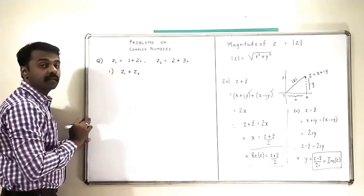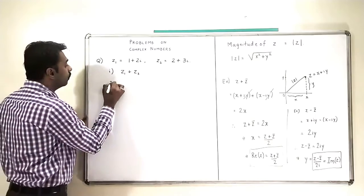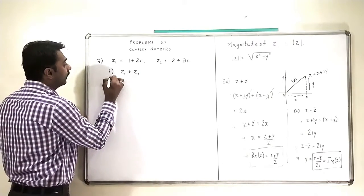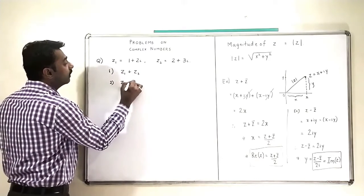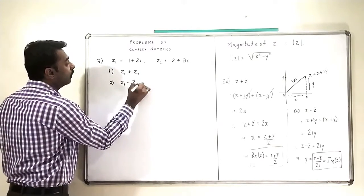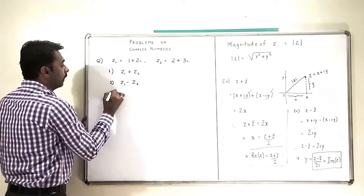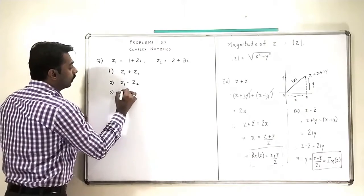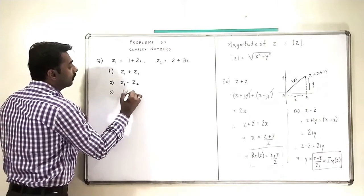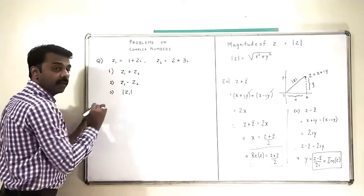What is Z1 plus Z2? Then let me say, what is Z1 minus Z2? What is mod Z1?